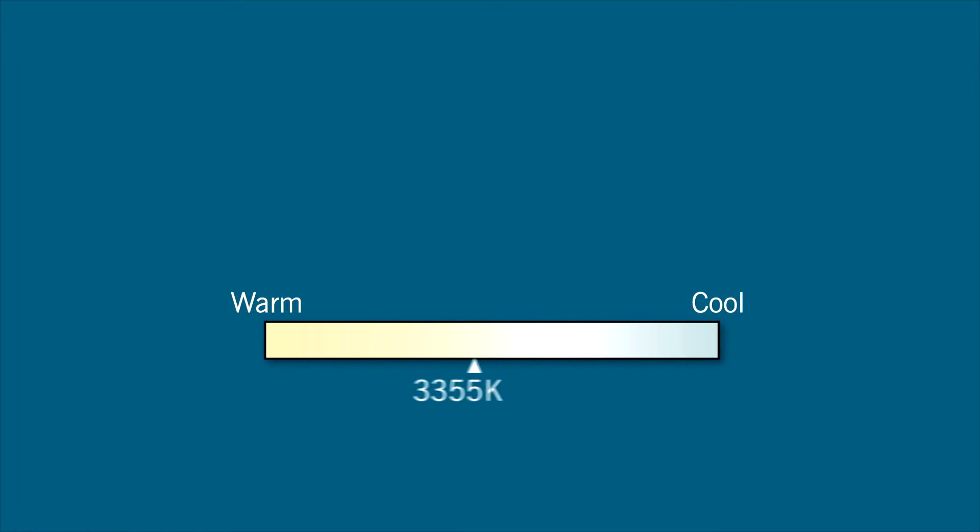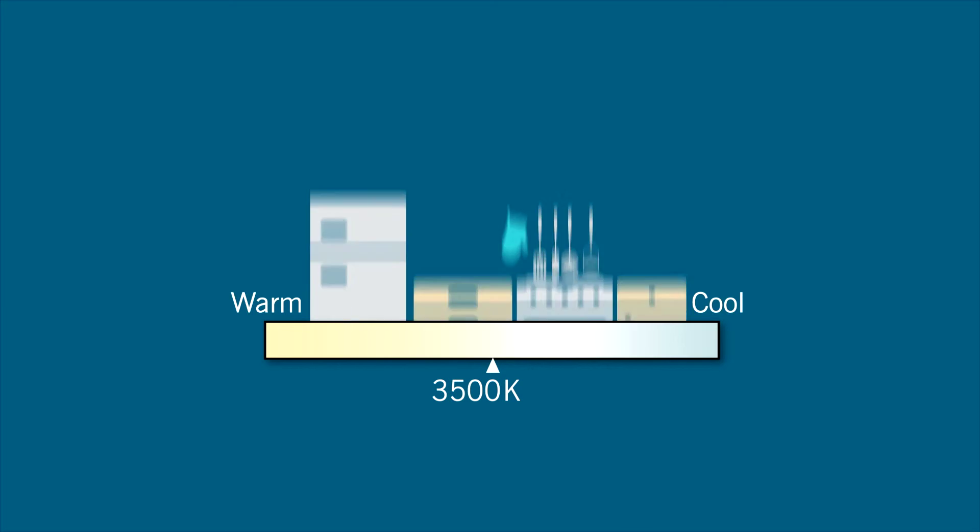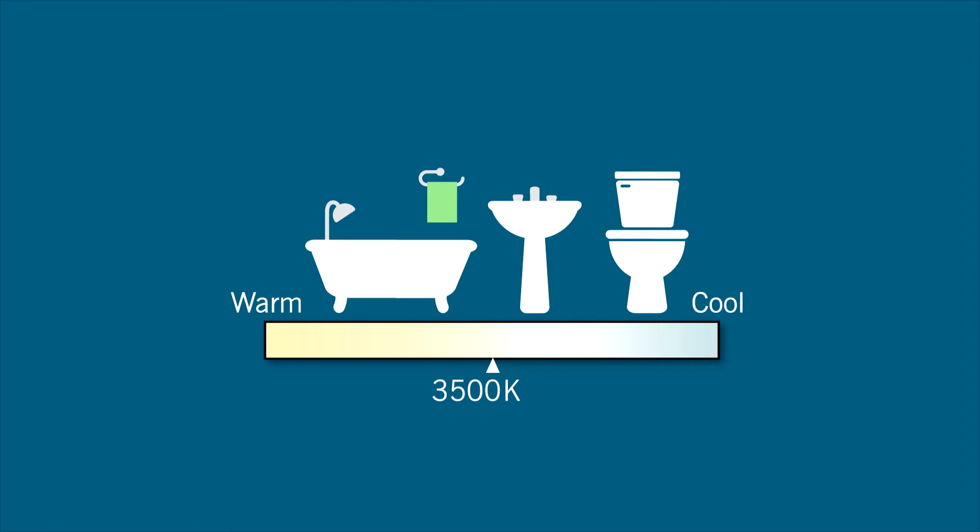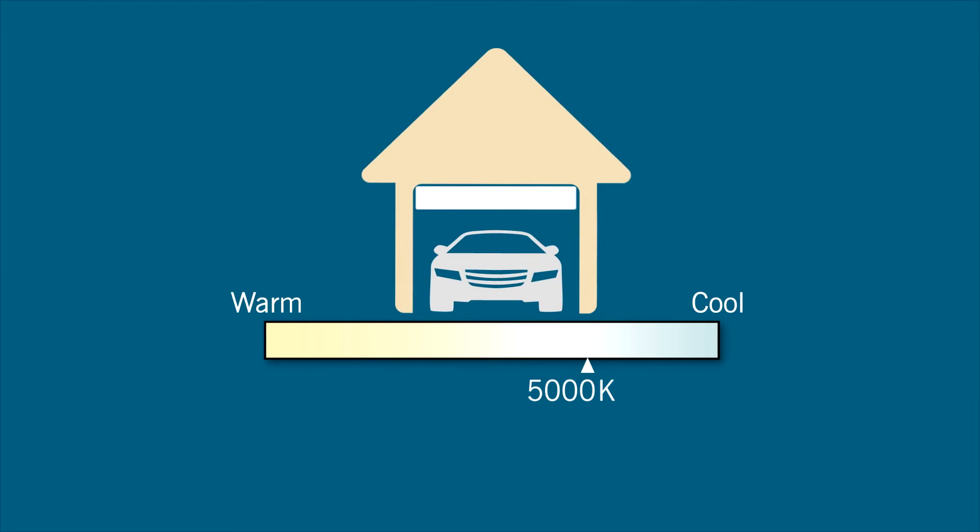Numbers in the 3,000 to 4,000 Kelvin range are better used to light the kitchen and bathroom. Bulbs in the 5,000 Kelvin range are crisp white and perfect for utility rooms and garages.